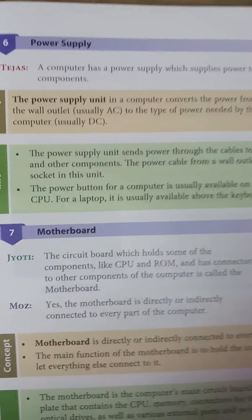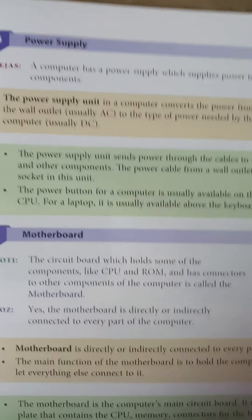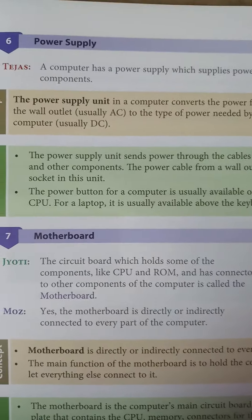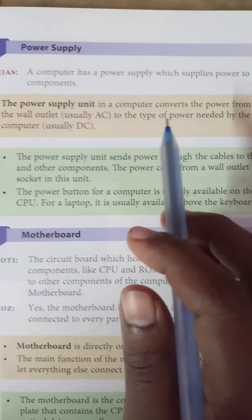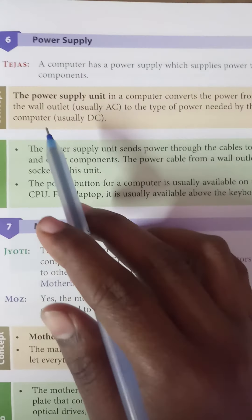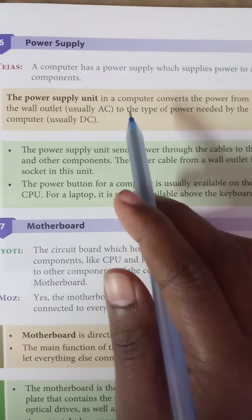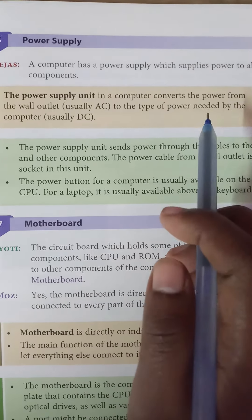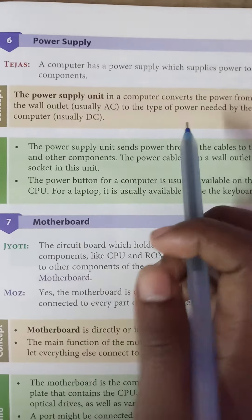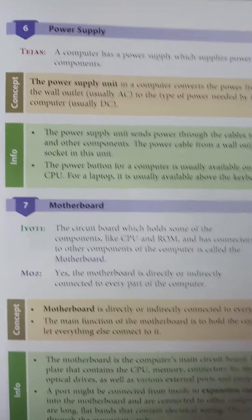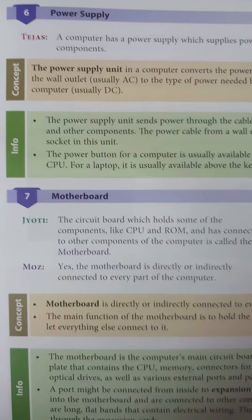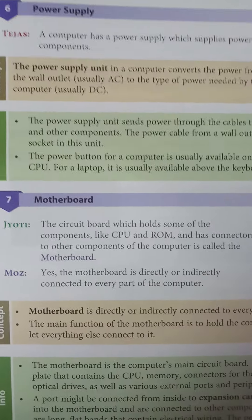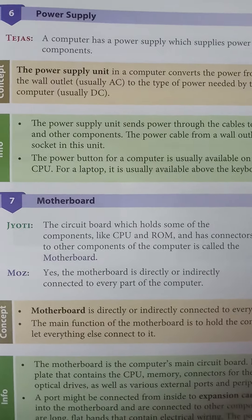The next topic is power supply. The power supply unit in your computer converts the power from the wall outlet — usually AC — to the type of power needed by the computer, usually DC. It converts AC current to DC current.